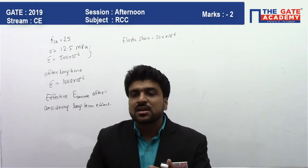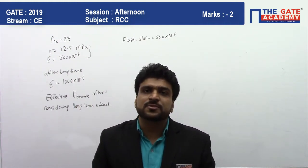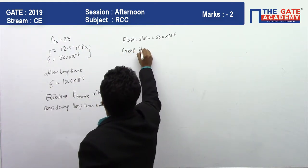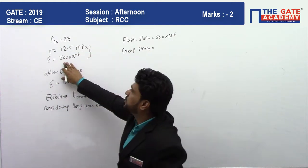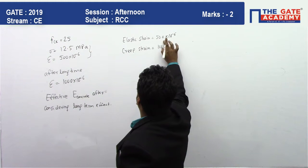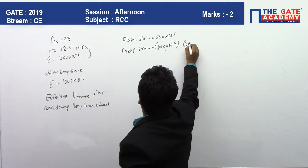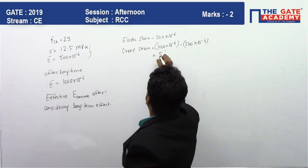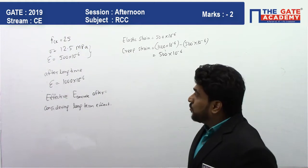Since the deformation is continuing under the same loading, the specimen is subjected to creep. The remaining amount of strain beyond the elastic strain is the creep strain. Creep strain = 1000×10⁻⁶ − 500×10⁻⁶ = 500×10⁻⁶.